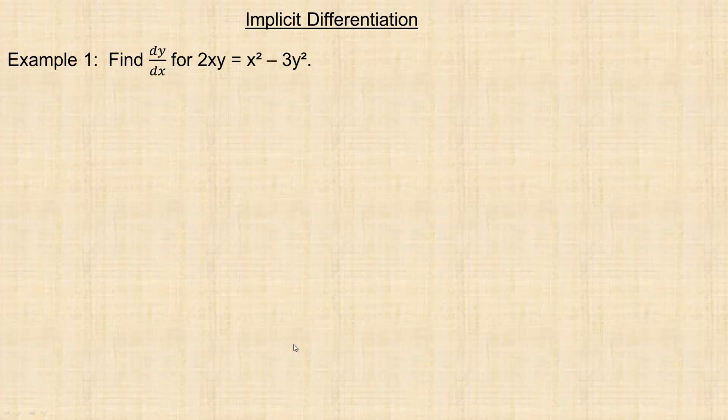In this tutorial, we're going to take a look at some examples of a certain kind of differentiation called implicit differentiation. In the first example, I'm going to show how to do implicit differentiation, but also why sometimes we actually need it as well. We're going to start with y first, and then show how implicit differentiation works.